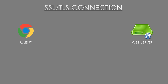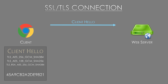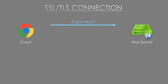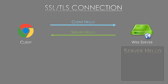HTTPS uses TCP, so the conversation always starts with a three-way handshake, but it's after that point that it gets really interesting. The client sends a hello message to the server asking to start a secure session. As part of this message, the client sends a list of cipher suites it's willing to support in order of preference, along with a large random number. From this list, the server will select a cipher it is happy to use — assuming they can agree on one.